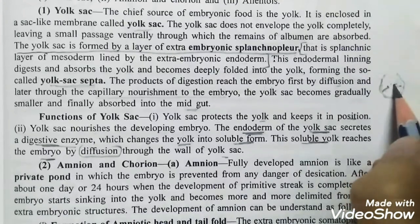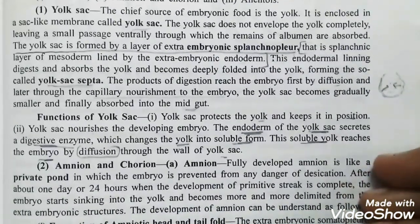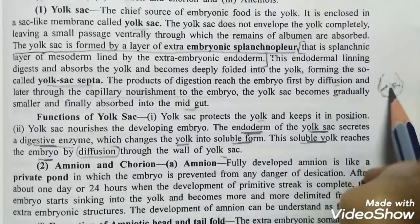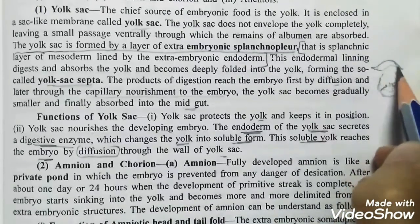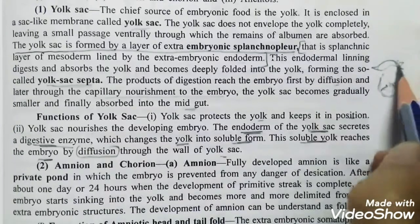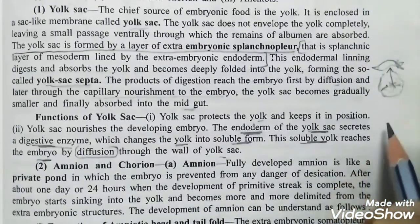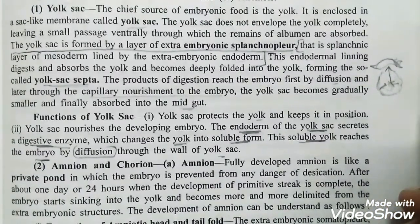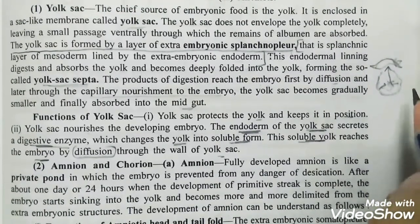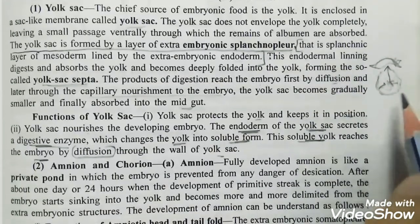When the digestive enzyme comes in a soluble format, it will nourish the developing embryo. This is a formation of the yolk sac. In the last stage, it will be absorbed in the midgut when development is complete.